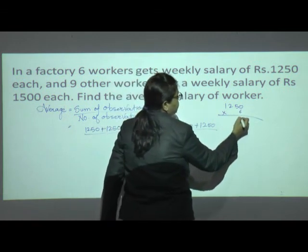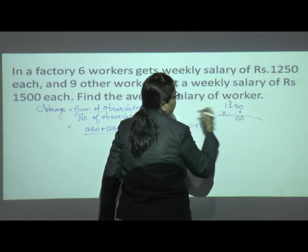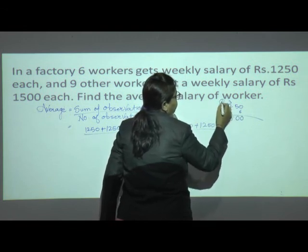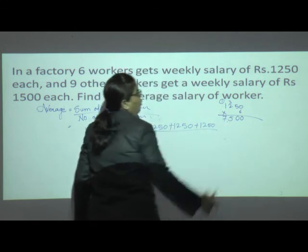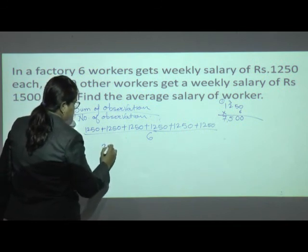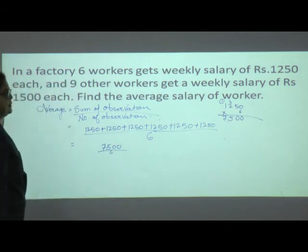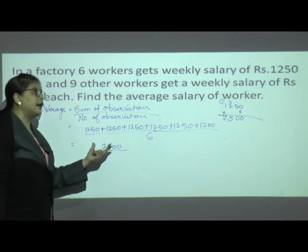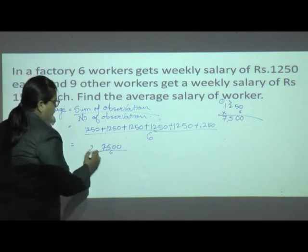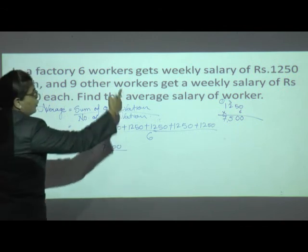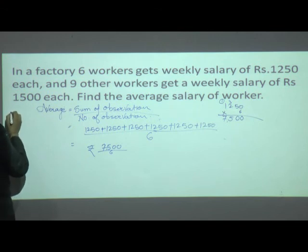So the total salary is 7500 divided by 6. We had done the same as the previous example — nothing extra, but here we are having large numbers in the form of rupees. Average for the 6 workers is rupees 7500 upon 6.